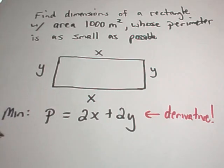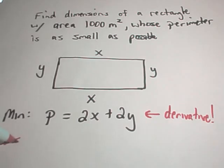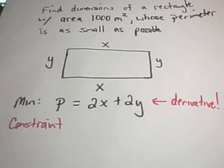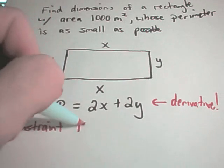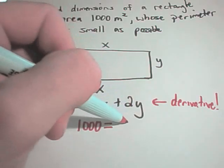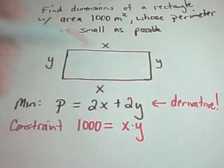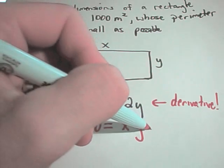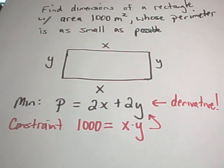The way I can get this down to a single variable is I have what you can call a constraint, and the constraint in this problem is that the area has to equal 1000. Well, the area of this rectangle is just going to be X times Y.